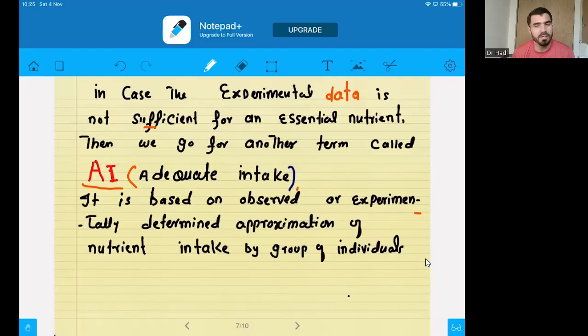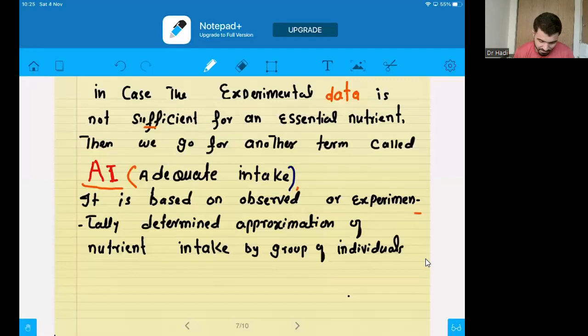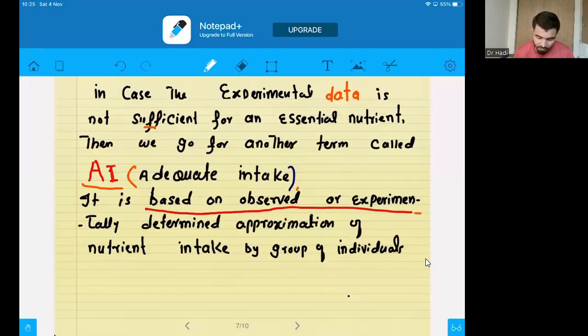What is adequate intake? This is actually based on the observed or experimentally determined approximation. You just make an approximation from the experiment or any observed value of the nutrients. I would like to give you an example. The example is the infants. Experimental data cannot be sufficient in case of infants.